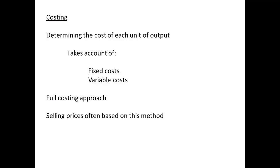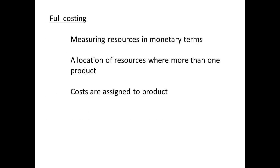Job costing means that we are trying to determine the cost of each unit of output. We have to determine and take account of the fixed costs and the variable costs, and the aim is to determine the full cost and to make use of this information for management and for selling prices. We have to measure all our resources in monetary terms so they can be compared and determined. Where there is more than one product, we must try and allocate the resources so that costs are being assigned to a product.